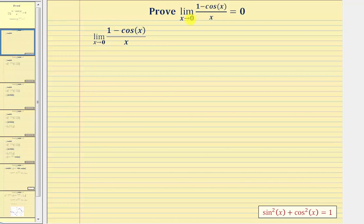Looking at the given limit, notice how if we try to perform direct substitution, we would have zero divided by zero, which is an indeterminate form. So we're going to change the form of our function by multiplying both the numerator and denominator by the conjugate of one minus cosine x, which would be one plus cosine x.